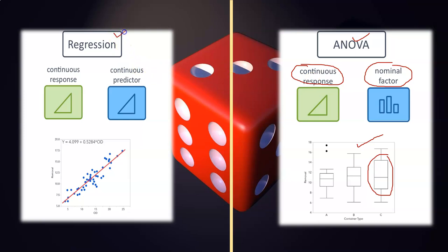When we use regression, we also need independent and dependent variables. But in the case of regression analysis, the independent variable should be a continuous predictor. The dependent variable should also be continuous. There are more types of regression based on the type of data, the number of independent variables, and the shape of the curve — but here I will focus on linear regression as well as ANOVA.